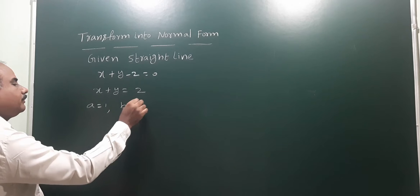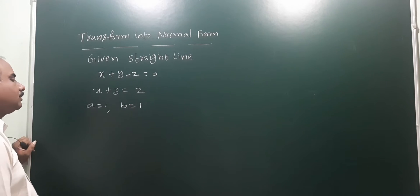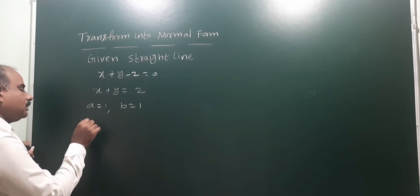The coefficient of x is a equals 1, and the coefficient of y is b equals 1. Next, we need to find the value of r.